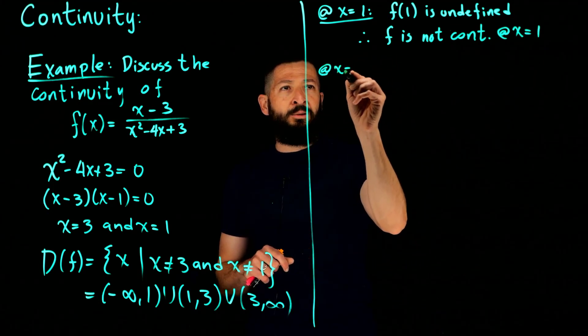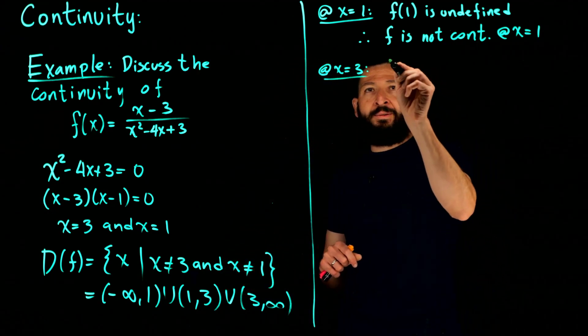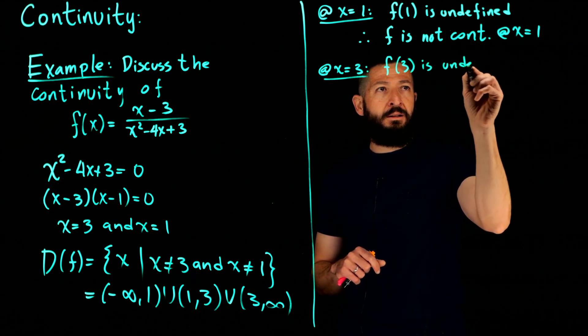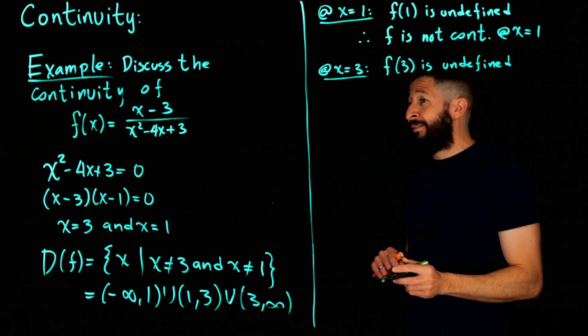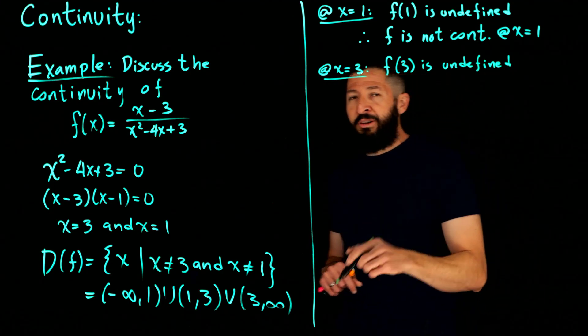Now let's see what happens at x equals to 3. Well, the same is true, f of 3 is undefined. But then you have something else that is happening here. In this particular case.